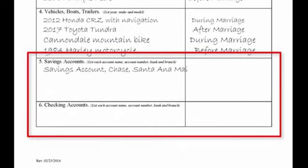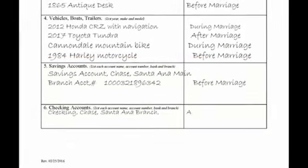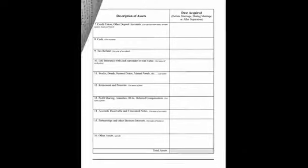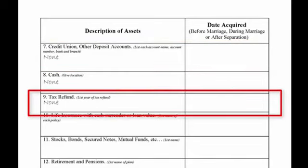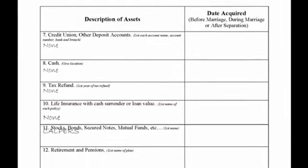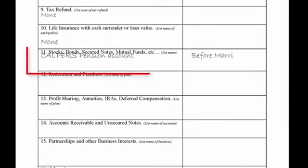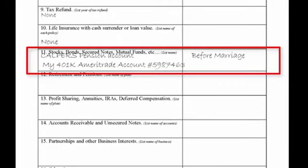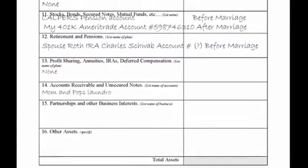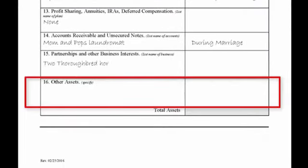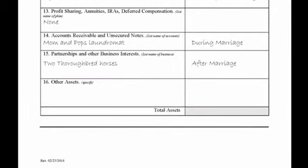Starting in Section 5, the questions are more of a financial nature. Provide separate and joint information for you and your spouse or domestic partner with account numbers. In number 7, include your credit union and deposit accounts if you have not already listed them above. If you have already spent your tax return or it has been deposited into your bank account, put 'none' in that box. If either you or your spouse have a retirement or pension account such as CalPERS or a Transamerica 401(k) plan, include it here. If it is a Roth IRA such as a MetLife IRA, include it here as well. Finally, in Section 16, use this section for items of value that don't fit elsewhere.